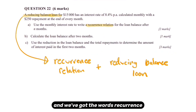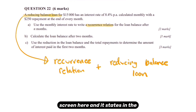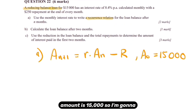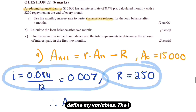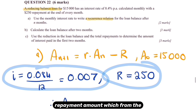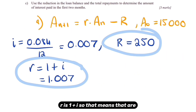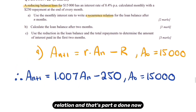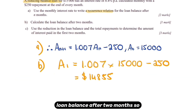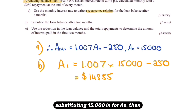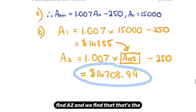The next question involves a reducing balance loan with the words 'recurrence relation' in part A, so I'll use the recurrence relation formula. The starting amount A_0 is $15,000. Little i equals 0.084 divided by 12, which is 0.007. The repayment amount is $250. R equals one plus i, so R is 1.007. Plugging into the recurrence relation gives part A. For part B, find A1 by substituting 15,000, then repeat to find A2 — that's the loan balance after two months.